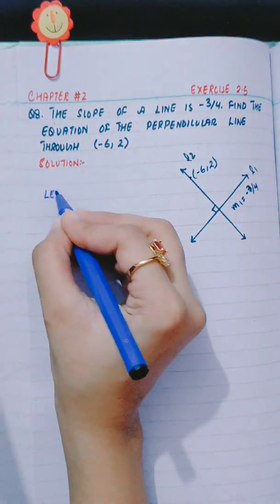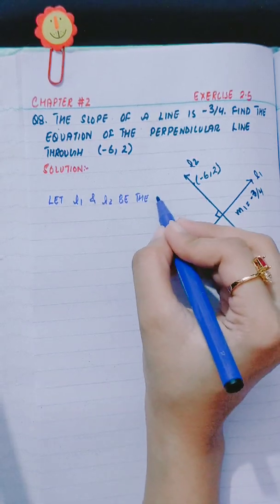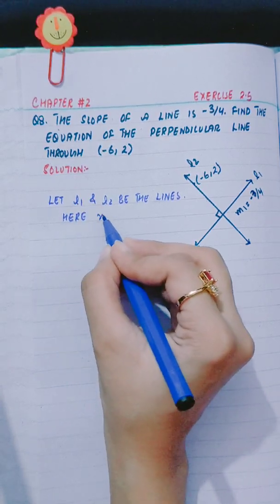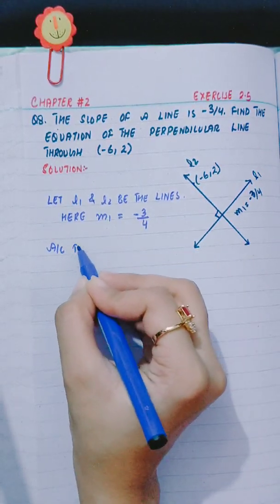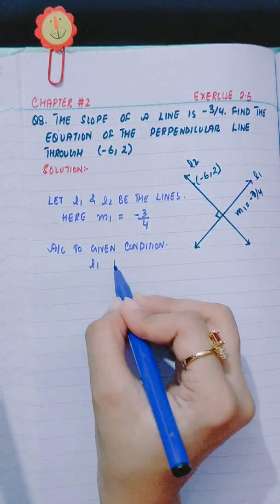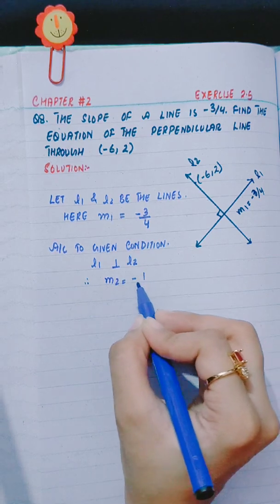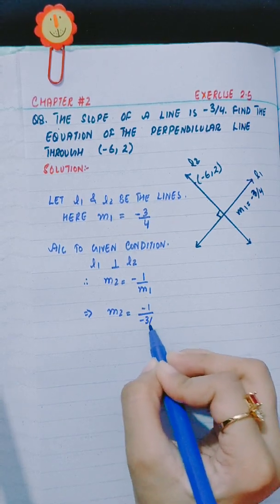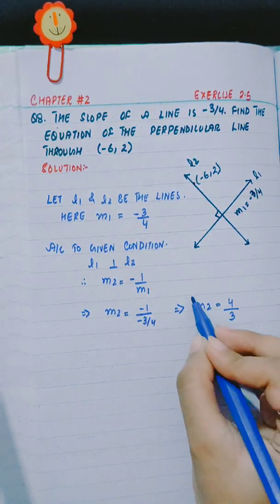Let L1 and L2 be the lines. We have the slope of the line, therefore M1 is equal to minus 3 by 4. According to the given condition, L1 is perpendicular to L2. Therefore, M2 slope is the negative reciprocal of M1, and M2 is equal to minus 1 divided by minus 3 by 4, which gives M2 equal to 4 by 3.